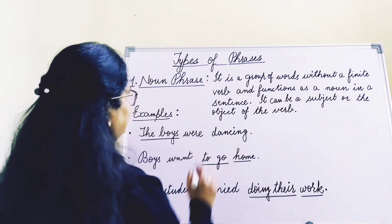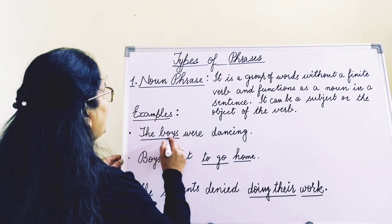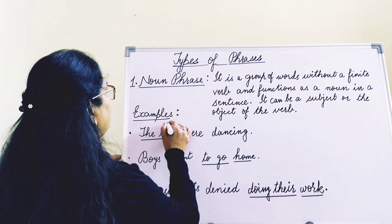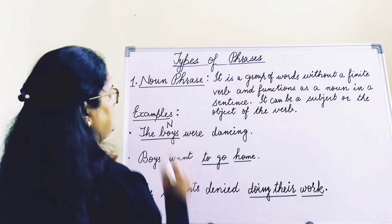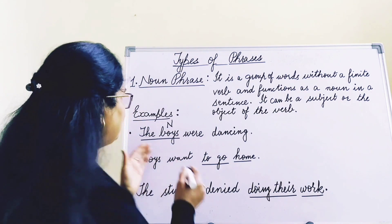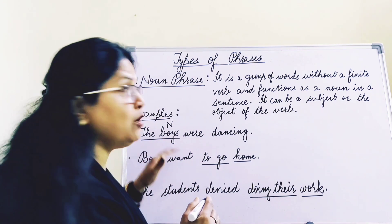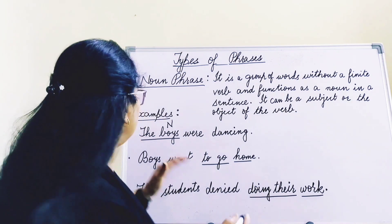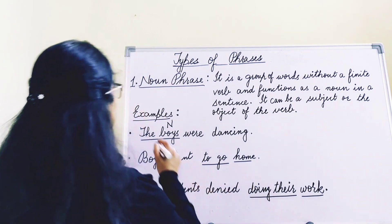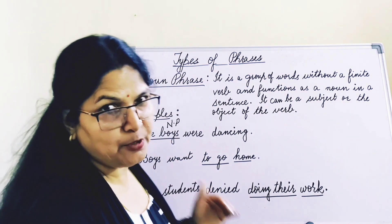Here: 'The boys were dancing.' If you see, 'boy' is a noun. But by adding the article, it becomes a phrase — a noun phrase — because boy is a noun. So 'the boys' became a noun phrase. We can write NP as short form for noun phrase.